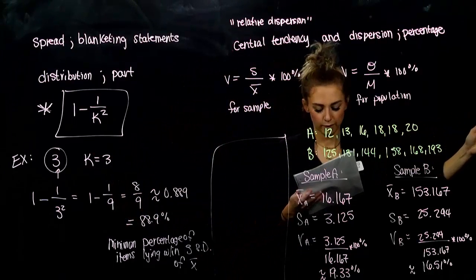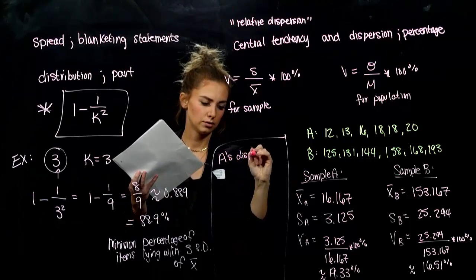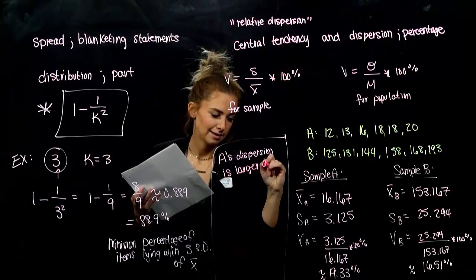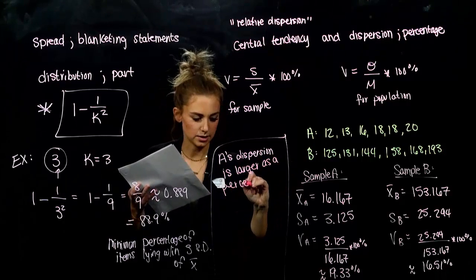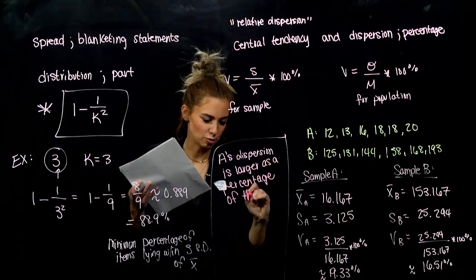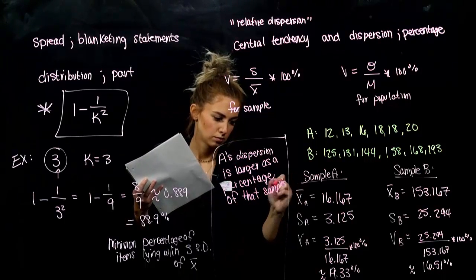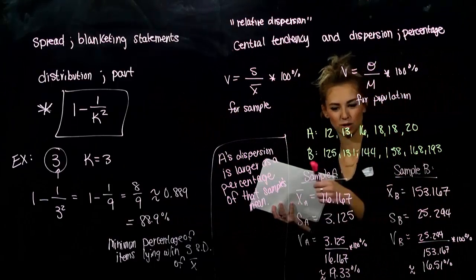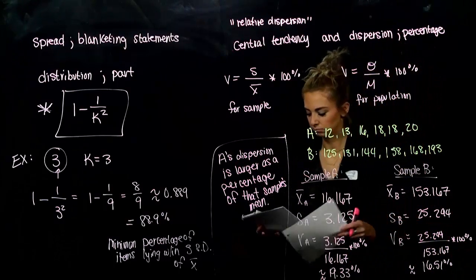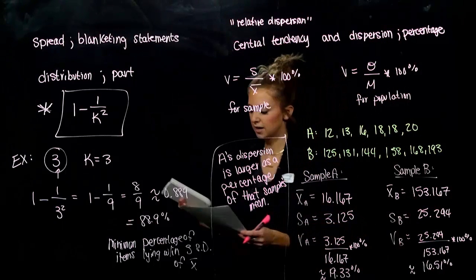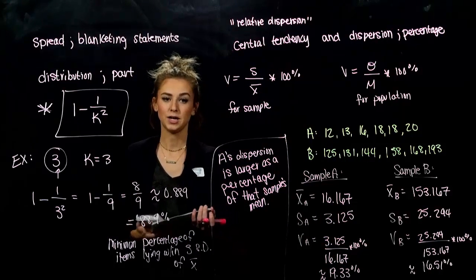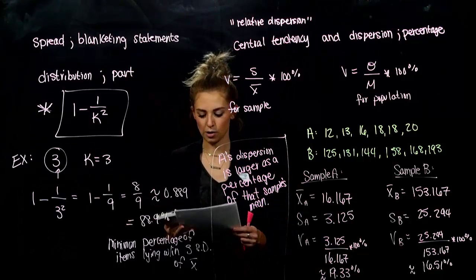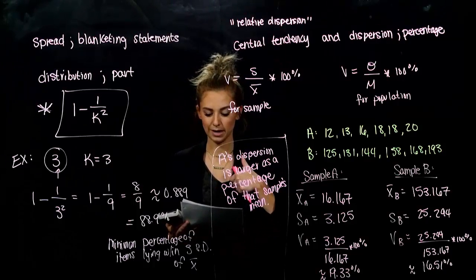Sample A's coefficient of variation is larger as a percentage of that sample's mean. So relative to its own data, A had larger dispersion compared to sample B, where the numbers were larger but the dispersion was actually a little bit lower. You've survived through section 12.3 — get working on the homework. It's open through Tuesday before class, so you have a little extra time. If you have questions, let me know — I'll be answering emails all through the weekend. See you Tuesday.